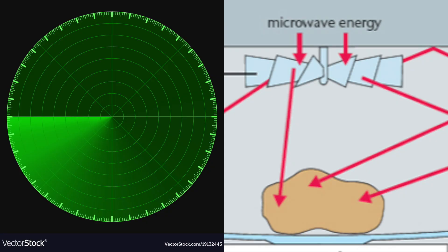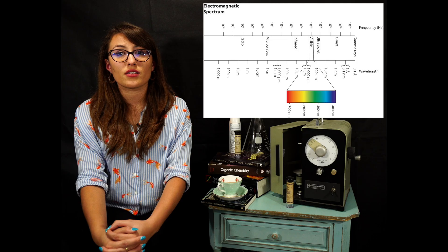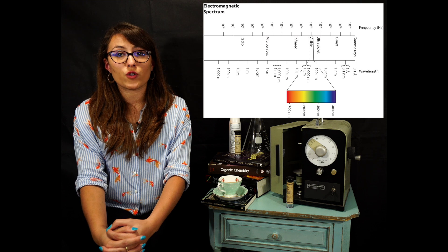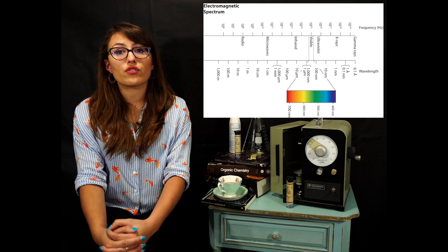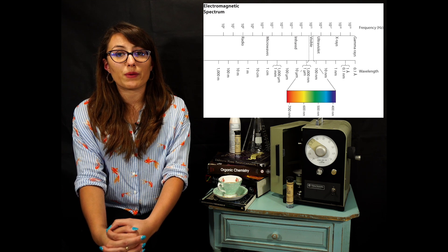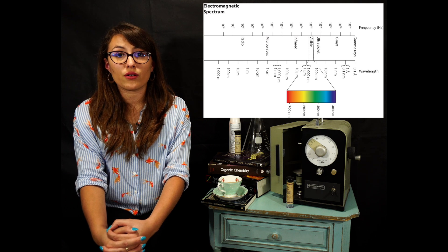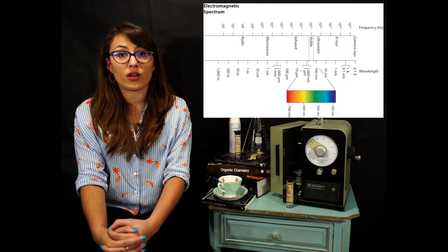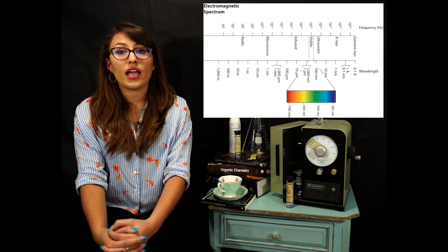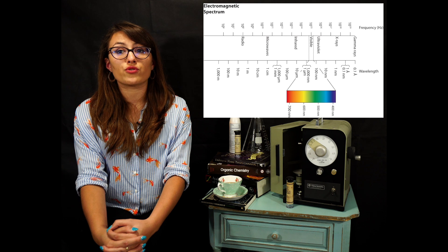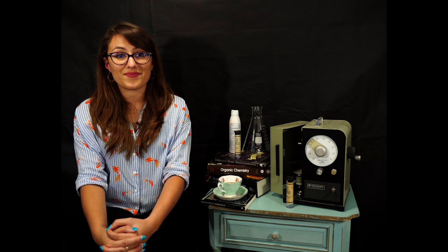Microwaves are used for radar and in microwave ovens. The last part on the spectrum are radio waves. These are the longest wavelengths on the spectrum, and these are commonly used to transmit signals such as FM, AM radios, and also cellphones are transmitted across these frequencies.